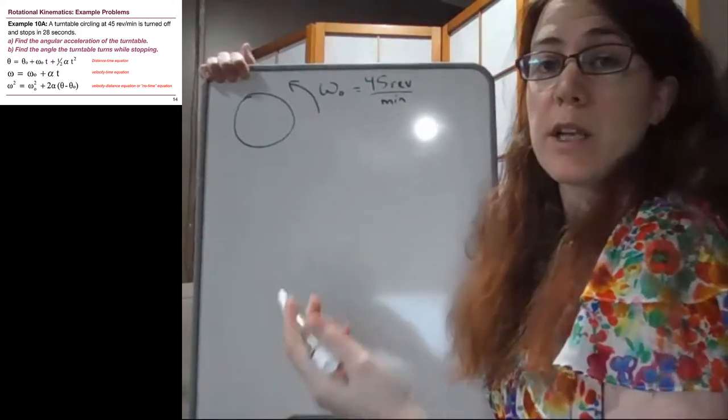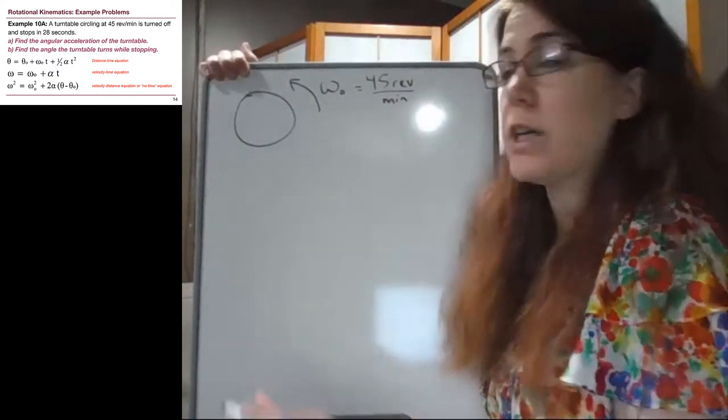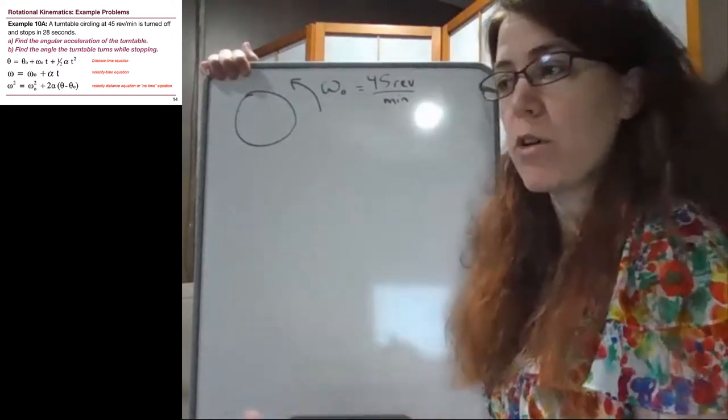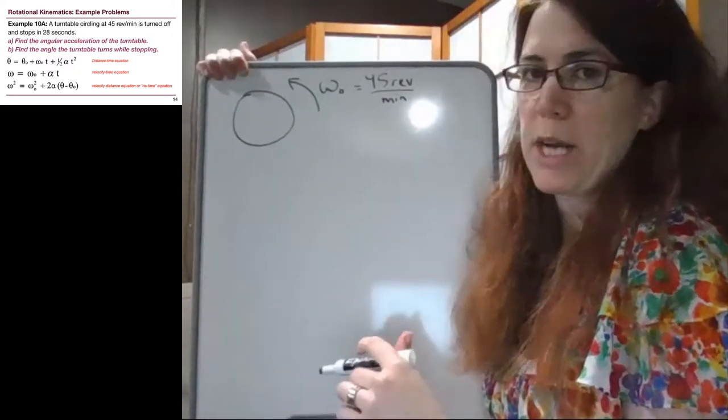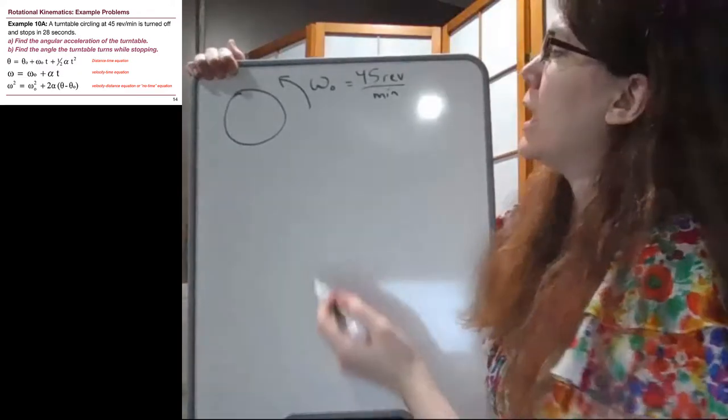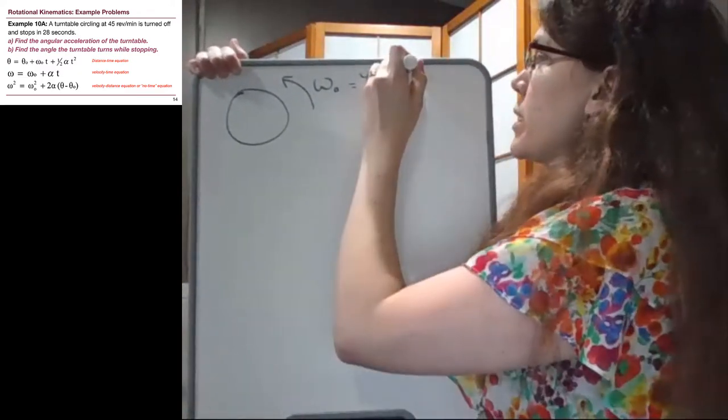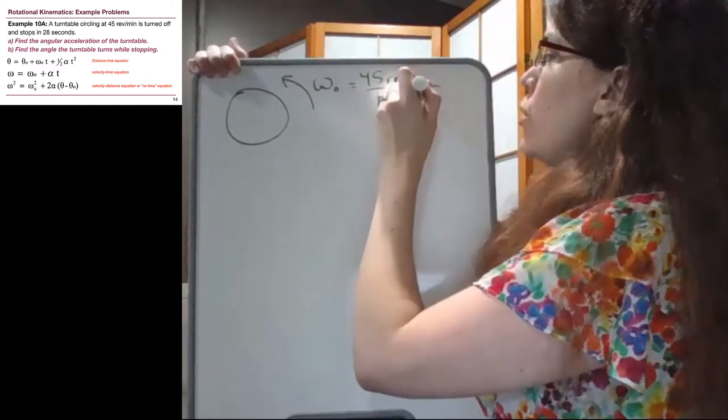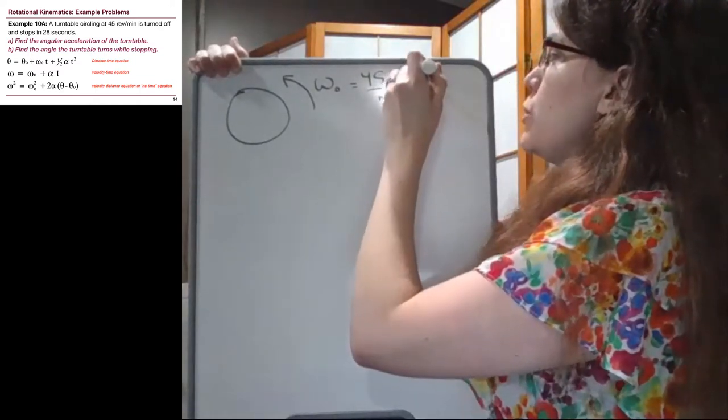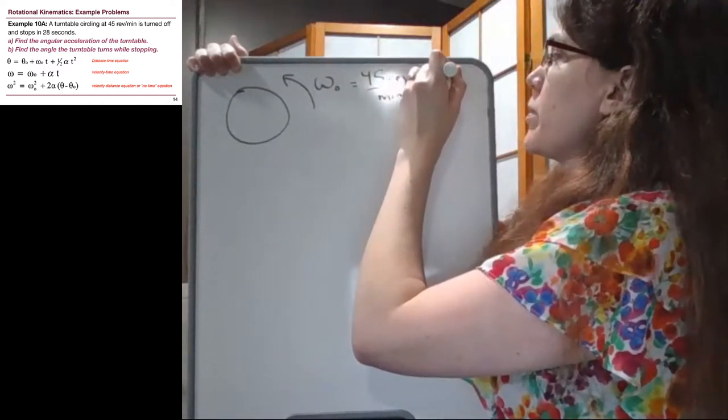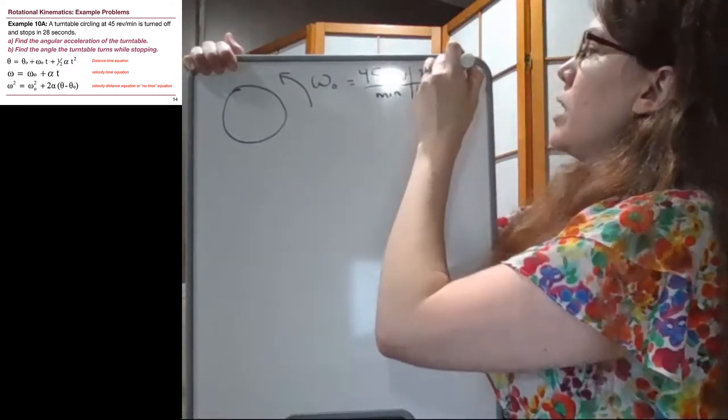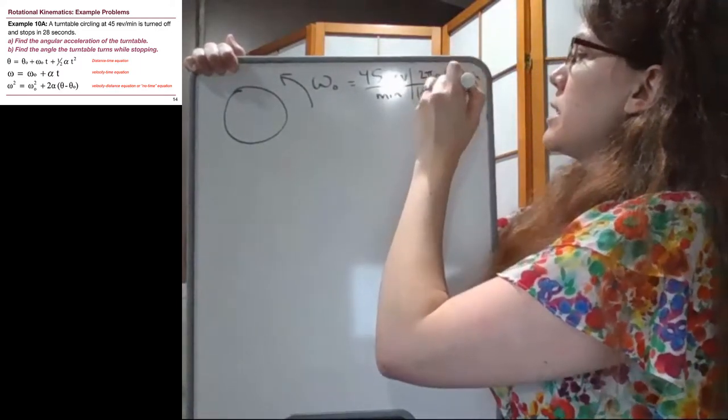But we know that our standard unit for omega, and if we don't know this it's probably worth making sure that we're practicing and getting this fact into our head, our standard units for omega are radians per second. So we have one revolution is two pi radians, and we have that one minute is 60 seconds.